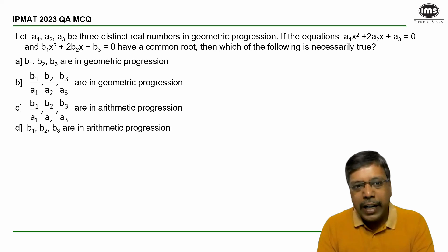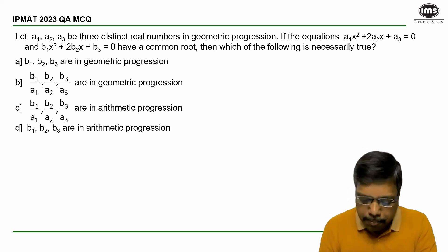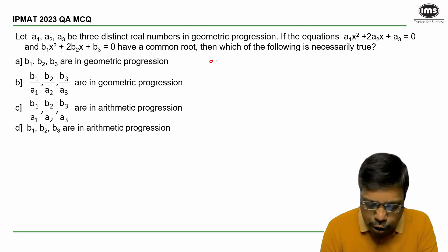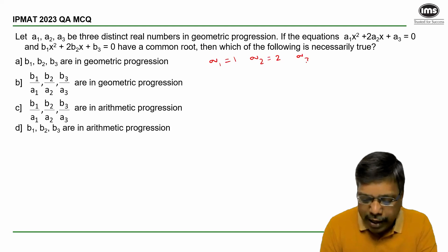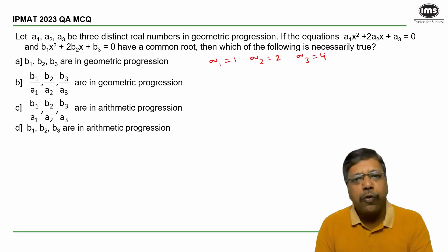Now since I know A1, A2, A3 are in geometric progression, let me consider certain numeric values. Let's say A1 equals 1, A2 equals 2, A3 equals 4. One, two, four are in a GP.